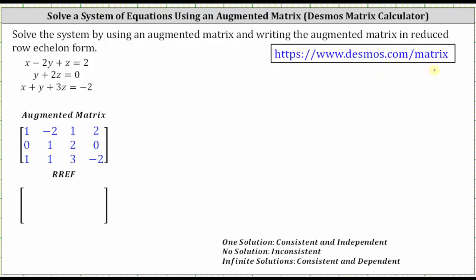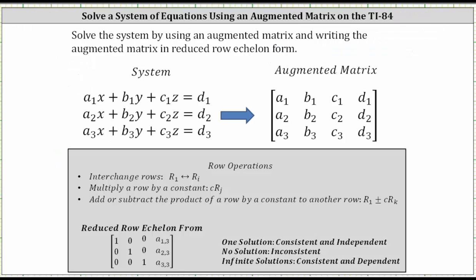For a quick review, to write the augmented matrix the equations must be in standard form, meaning the x, y, and z terms must be on the left and the constants on the right. Because we have a system of three equations with three unknowns, we have a three by four augmented matrix, where the first column contains the coefficients of x, the second column contains the coefficients of y, the third column contains the coefficients of z, and the fourth column contains the constants.